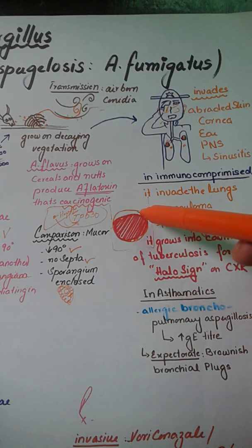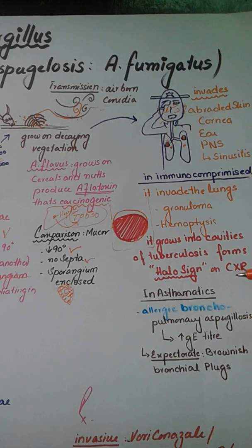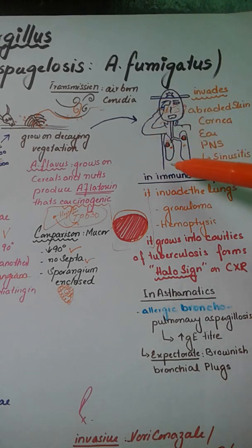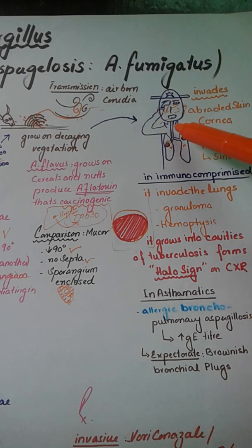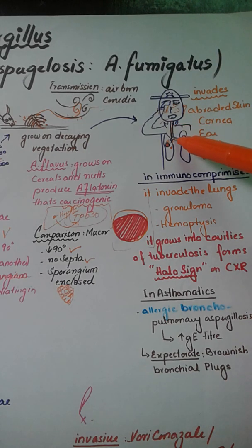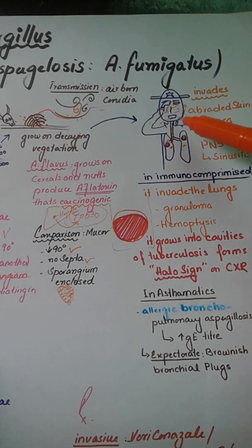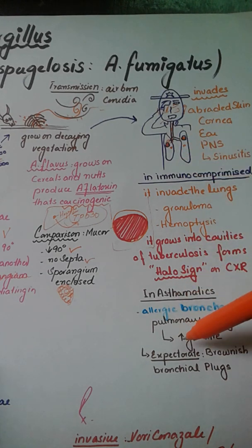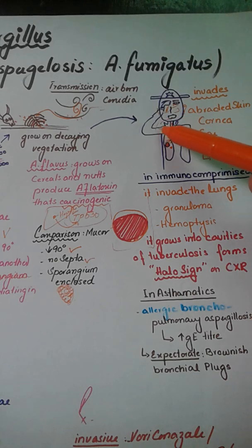If the patient is asthmatic, Aspergillus triggers an allergic response in the bronchi, worsening their asthma by increasing IgE titers. This condition is known as allergic bronchopulmonary aspergillosis, and the patient will expectorate brownish bronchial plugs with severely worsened asthma.